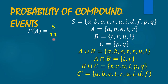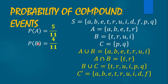For the probability of A, we have five outcomes — A, B, E, T, R — over the number of elements in the sample space, which is 11. So the probability of A is 5 over 11. For the probability of B, we have four outcomes — I, R, T, U — over 11. So we have 4 over 11.